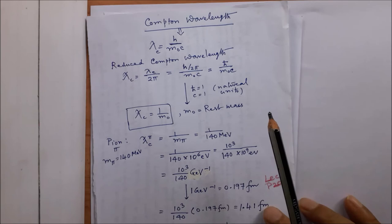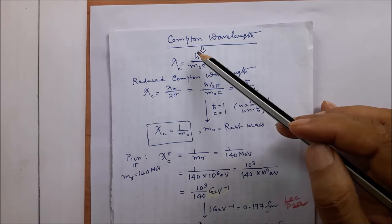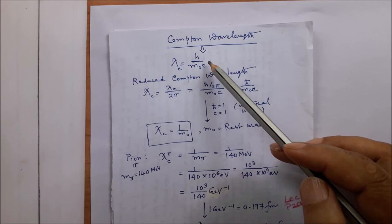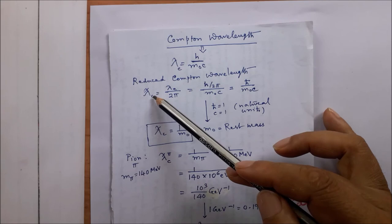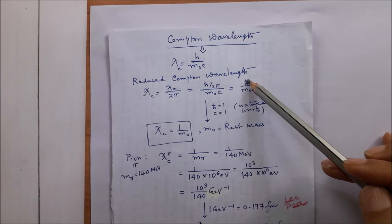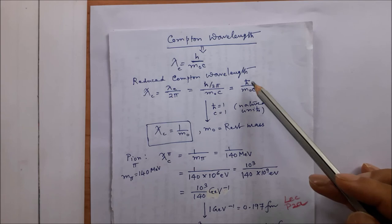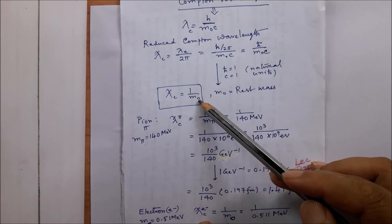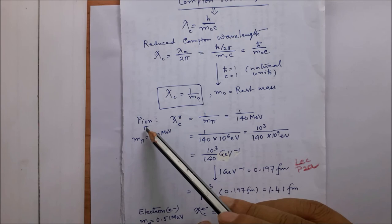The next problem is to find the Compton wavelength. The Compton wavelength lambda_C = h / (m_0 c), and the reduced Compton wavelength lambda-bar_C = h-cross / (m_0 c). In natural units h-cross = 1 and c = 1, so the reduced Compton wavelength simplifies to lambda-bar_C = 1/m_0, where m_0 is the rest mass. Various particles can be considered and their rest masses substituted. For a pion, which has rest mass 140 MeV, converting to GeV and using 1 GeV-inverse = 0.197 fermi gives a Compton wavelength of 1.41 fermi.